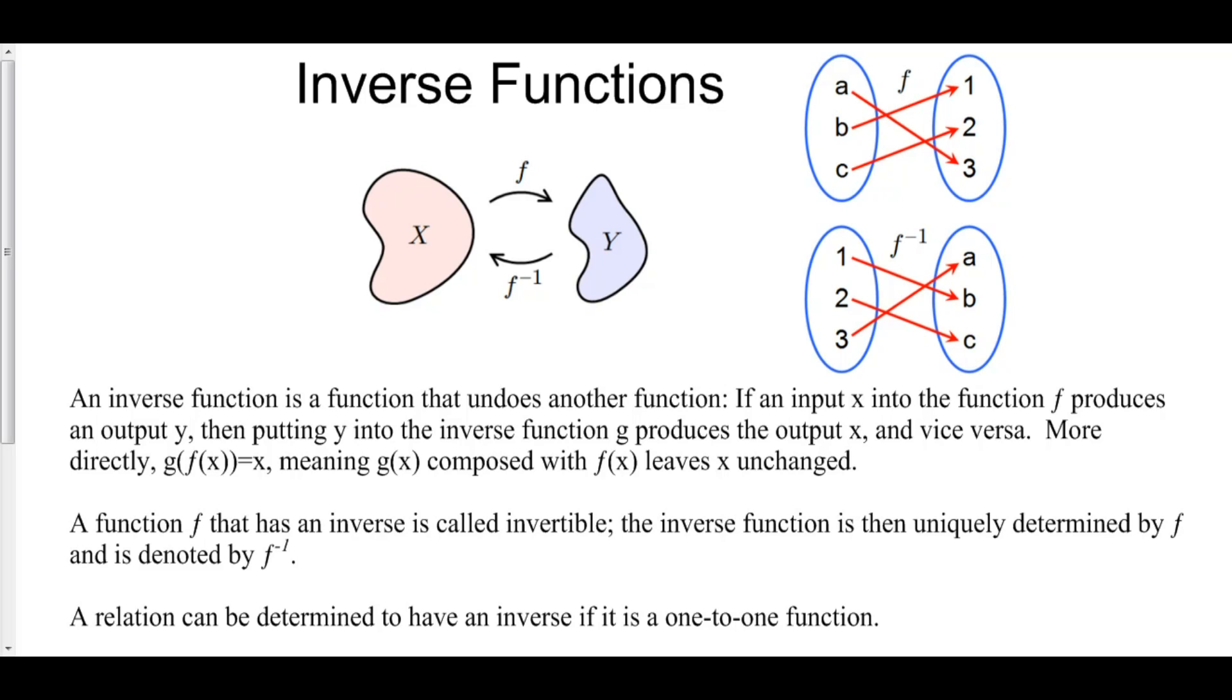Now, if we have a function that goes from our domain to our range, and A goes to three, B goes to one, C goes to two, then the inverse just undoes all of that. In other words, one now goes to B, two now goes to C, and three now goes to A.